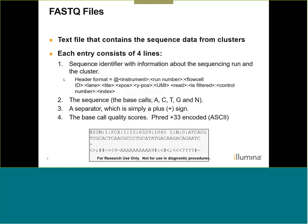The main output of BCL to FASTQ is going to be your FASTQ files. These are text files that contain the sequencing data from clusters. Each entry consists of four lines. The first is going to be the sequence identifier, which has information specific to the sequencing run as well as the cluster — including the instrument serial number, flow cell ID, and additional information such as the X and Y position of the clusters based on the tile.